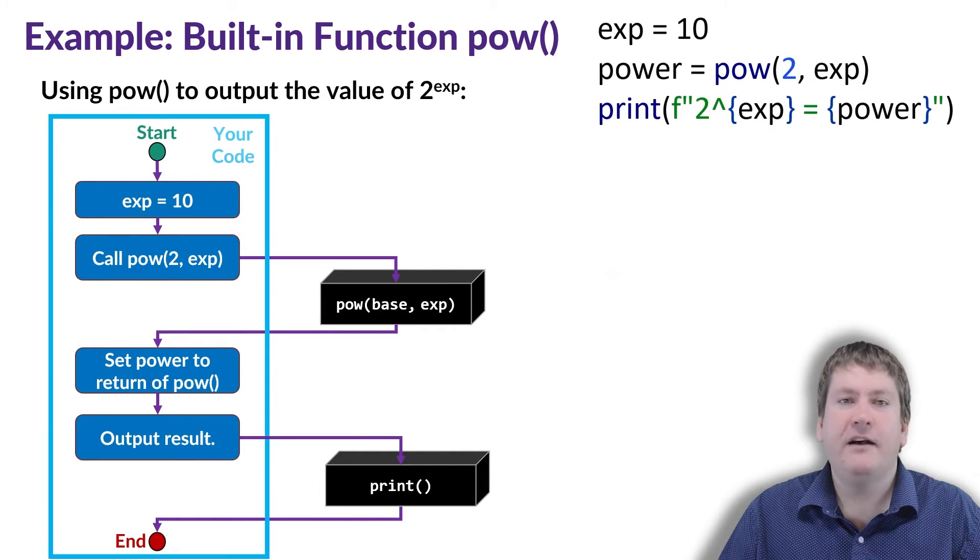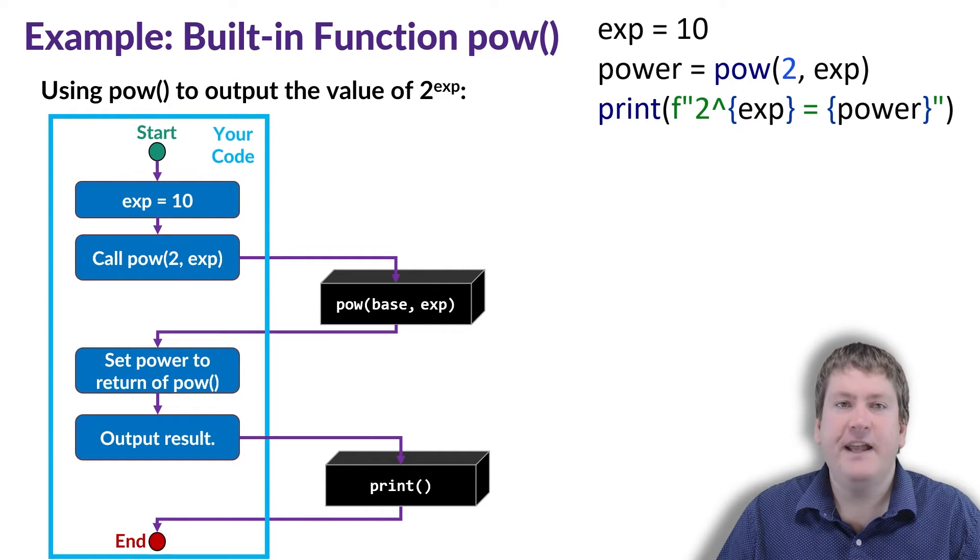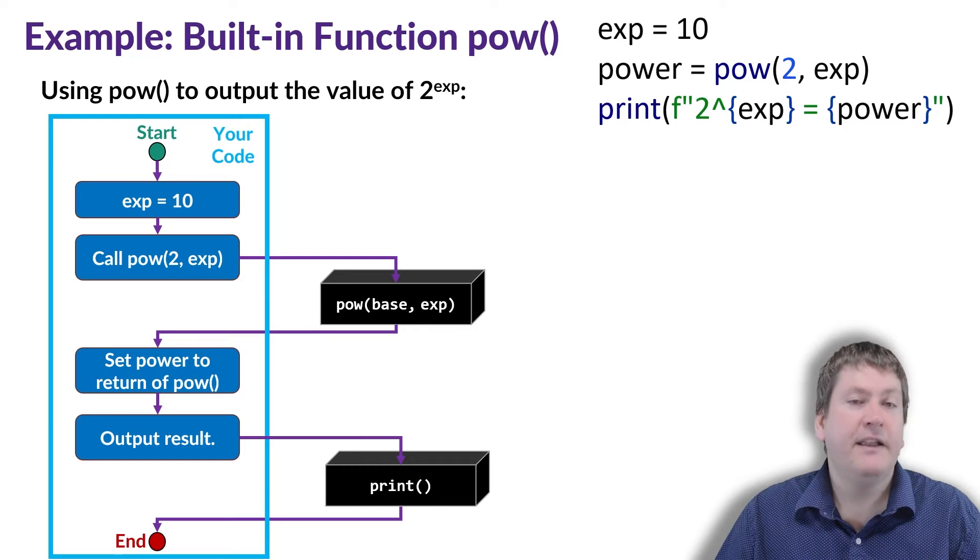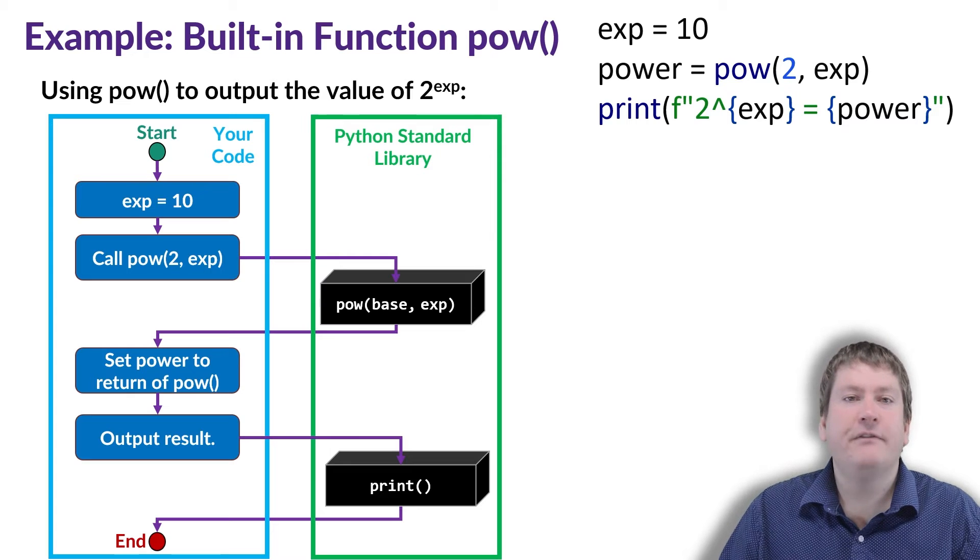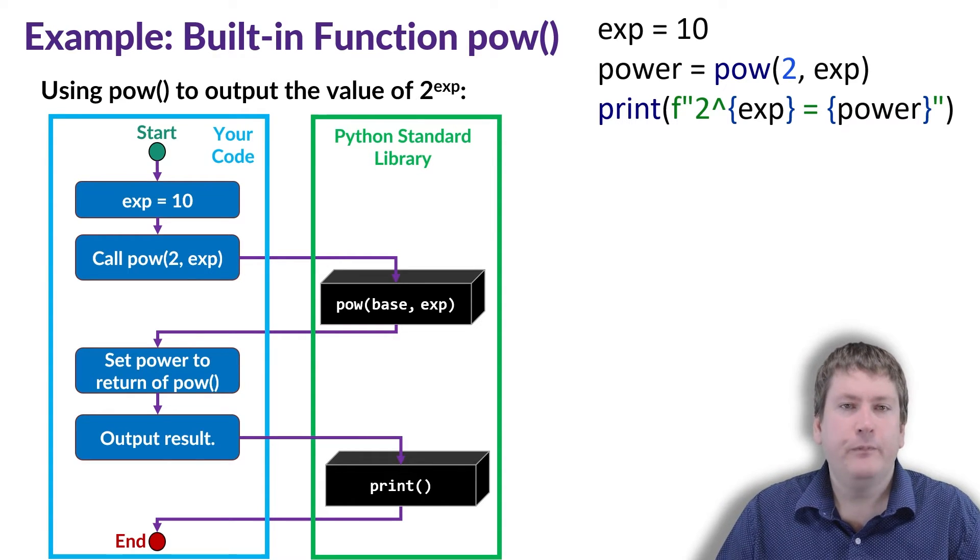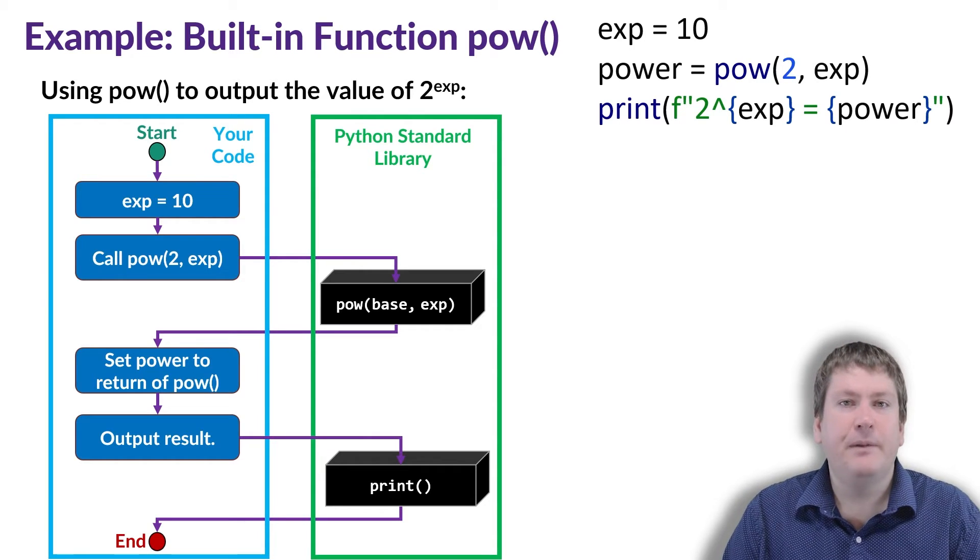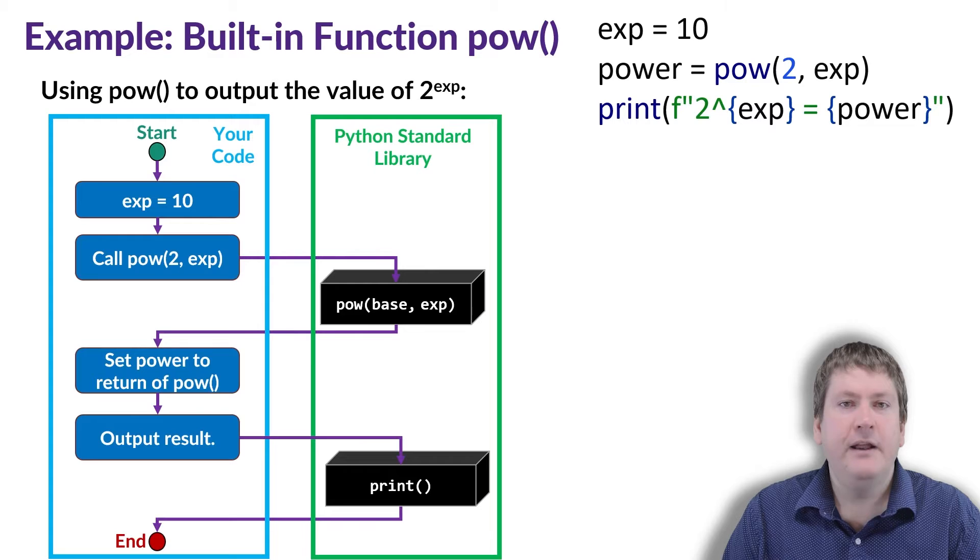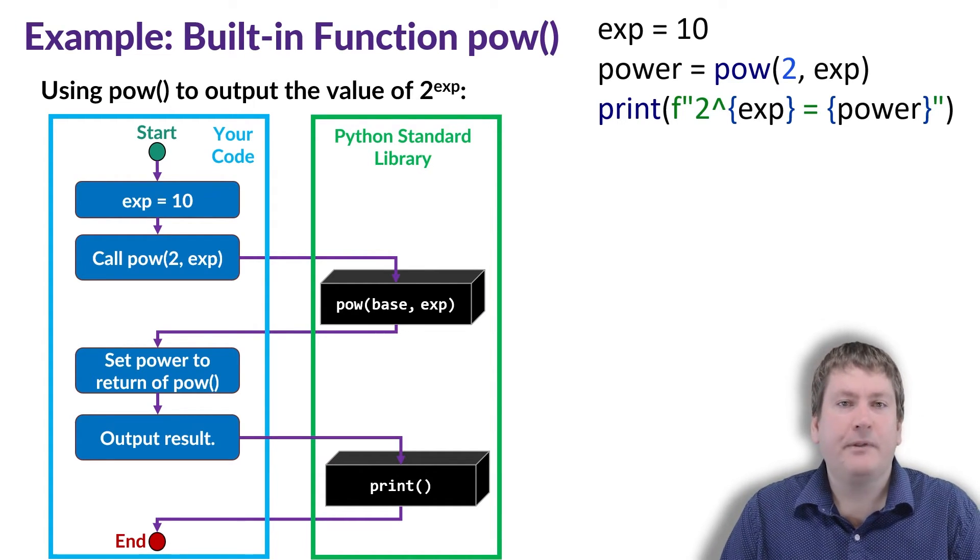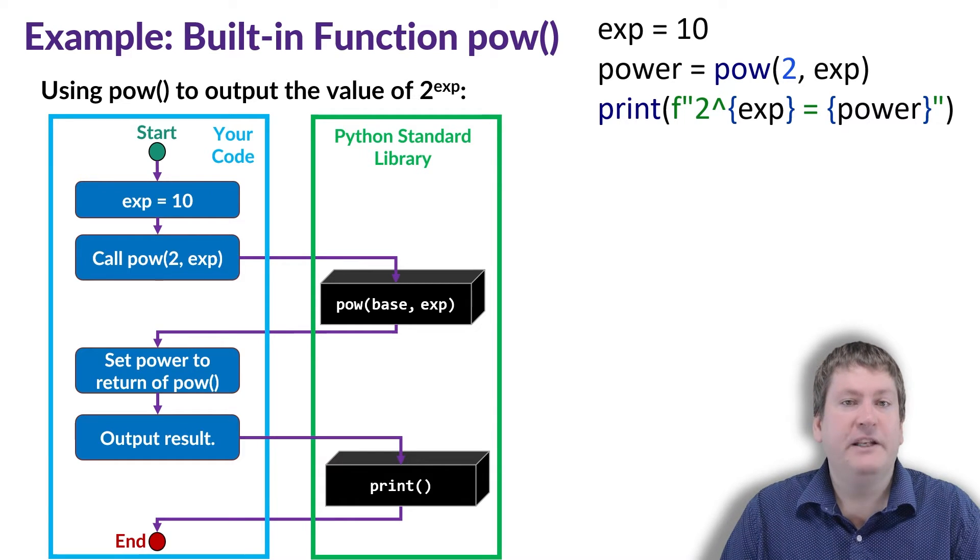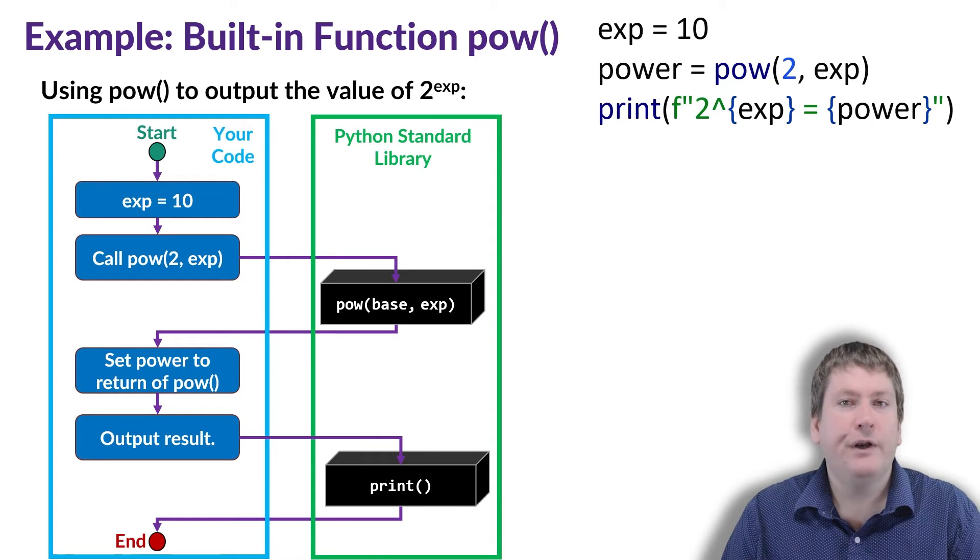Let's take a closer look at this now and explore it as a flowchart. So on the left here, we have all of the lines of code from our little program here. This includes things like setting exp to 10, calling the pow function, getting the result, and outputting the result. On the right here, we have those functions from Python's standard library. And this is why functions are so great. They've already been created for us in this case by the people who made the Python standard library, and they mean we don't have to solve these problems ourselves. For example, we don't have to write an implementation of the pow function, and we don't have to write an implementation of the print function.